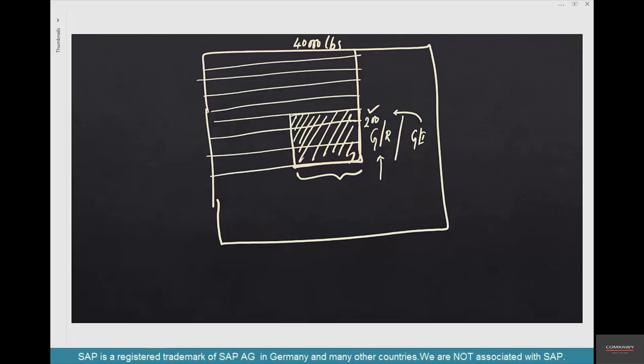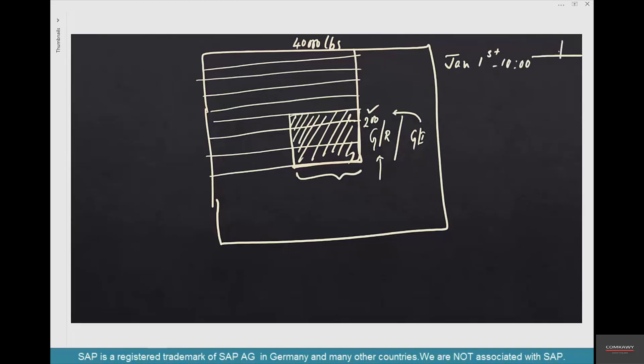But still you can keep counting. Let me give you an example. On Jan 1st, this is book versus this is physical. There is 100 pounds of stock. You create a PI and then freeze the inventory.